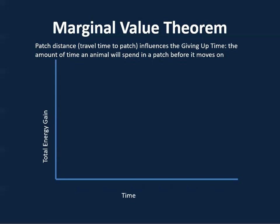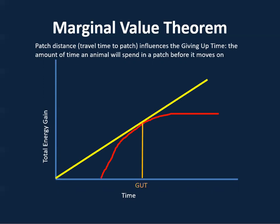On the x-axis we have time, and on the y-axis we have total energy gain. The red line represents the observed giving up time, and the yellow line represents the theoretical giving up time. Where these two lines meet is the actual predicted giving up time of the animal.